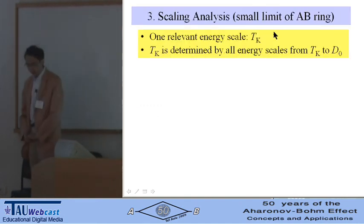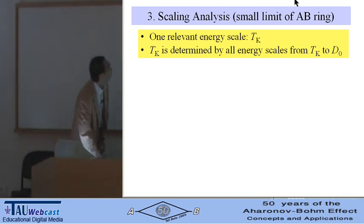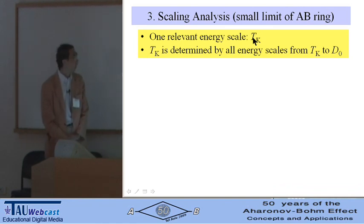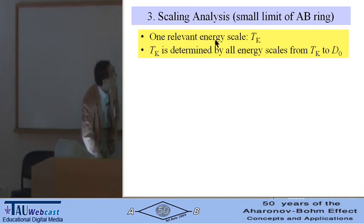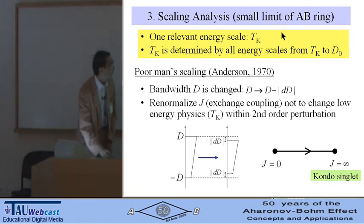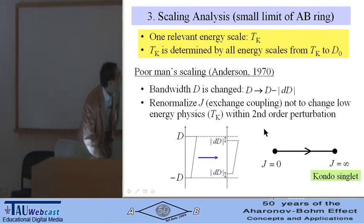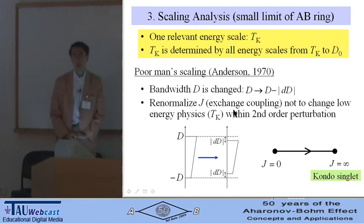Now examine the scaling analysis using the reduced model. The remarkable properties of the Kondo effect are there is only one relevant energy scale, Kondo temperature Tk, and Tk is determined by all the energy scales from Tk to the bandwidth. To capture the Kondo physics, Anderson's Poor-man scaling is useful. Bandwidth D is gradually changed, and we normalize exchange coupling between localized spin and leads not to change the low energy physics within the second-order perturbation.